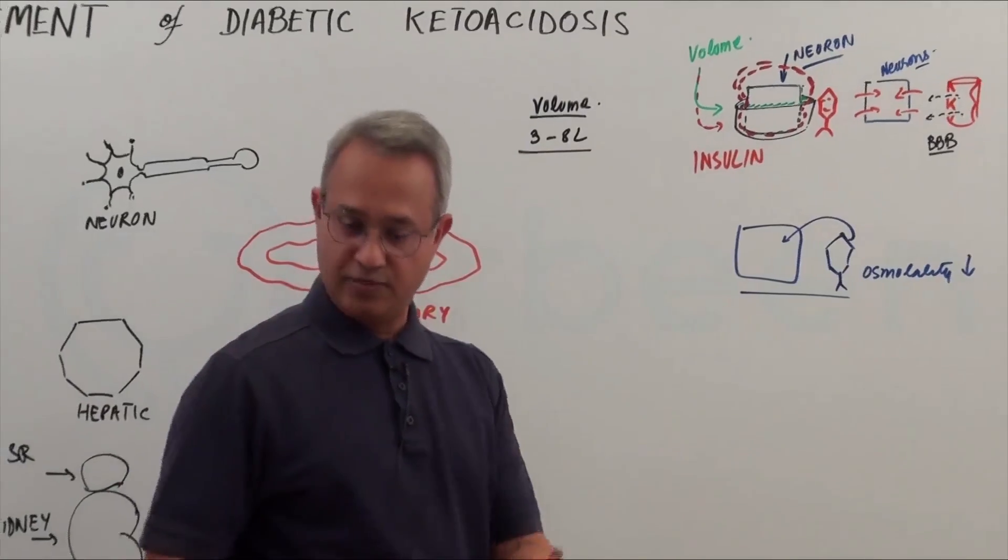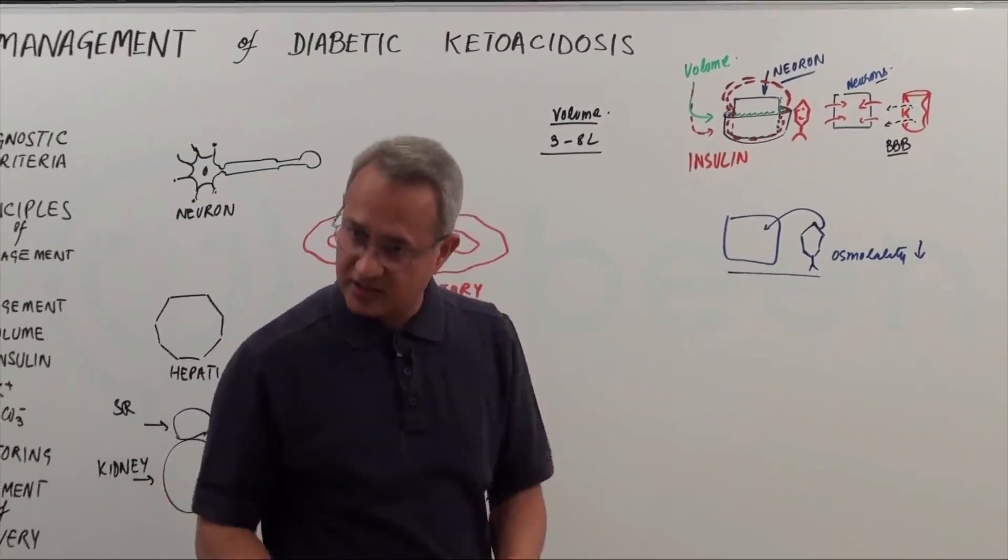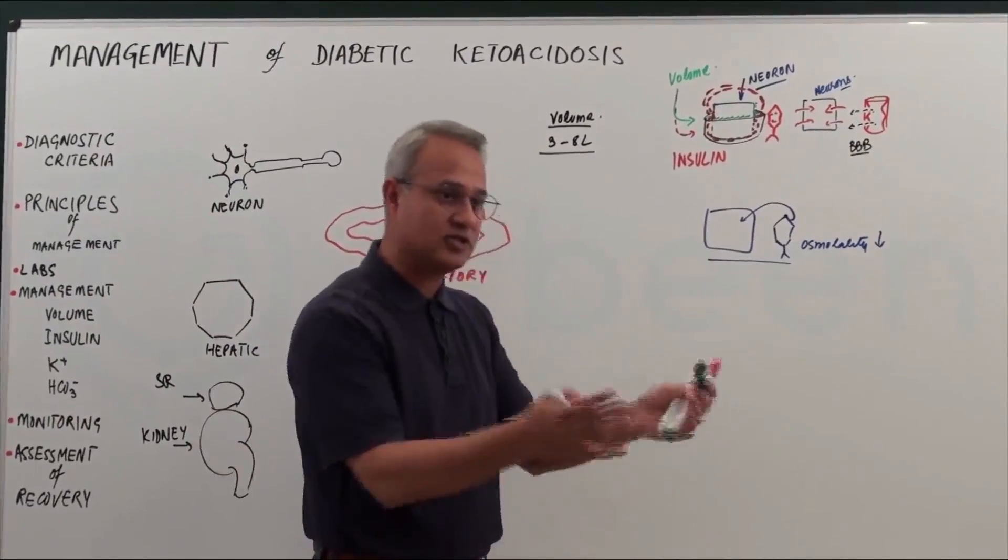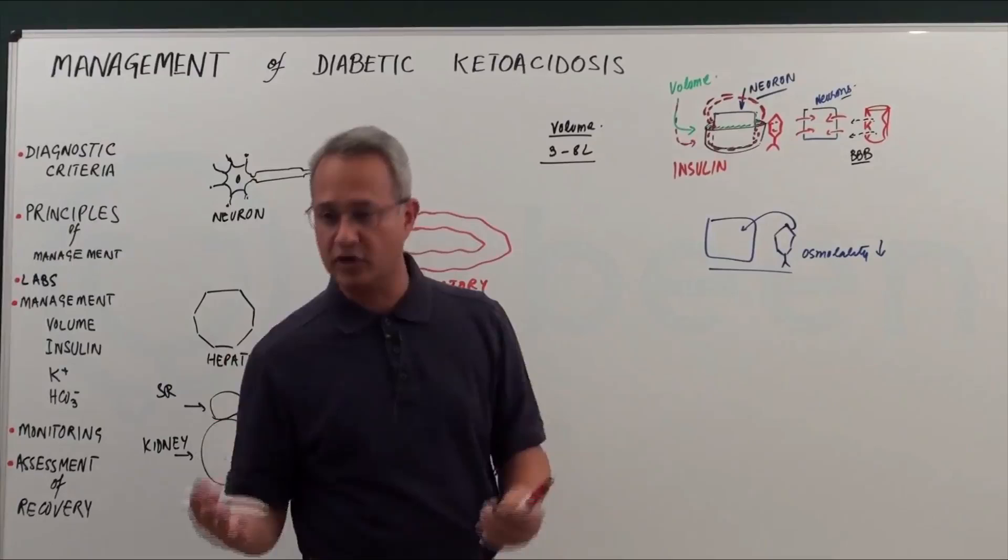So rest of the body picked up glucose, caused reduction in osmolality. That caused increased volume in the extracellular fluid. That volume is going to start shifting in all cells including neurons.